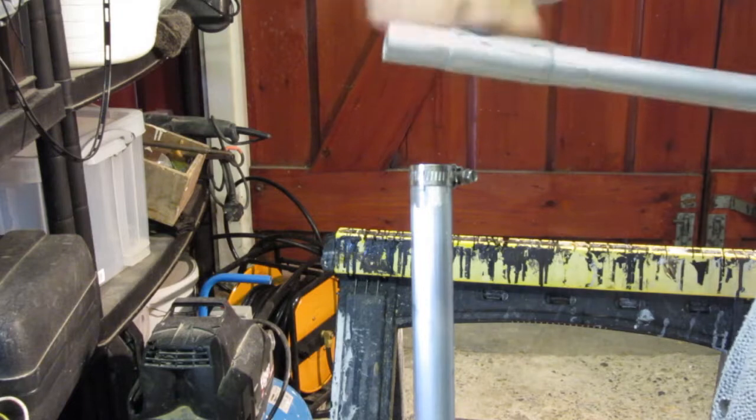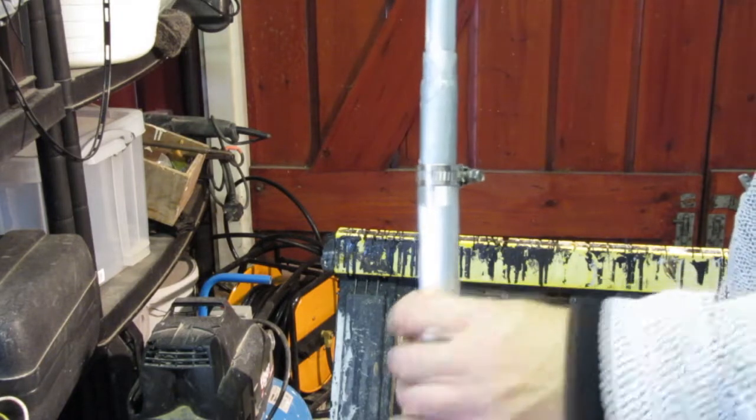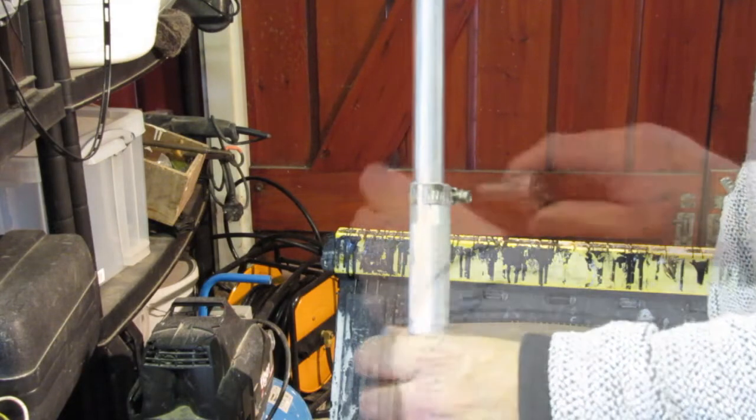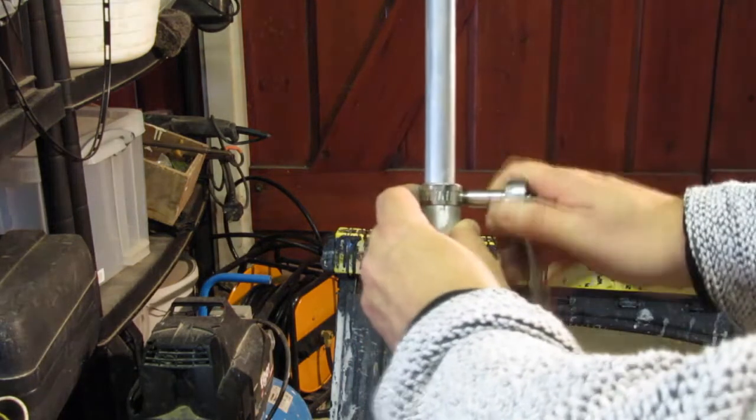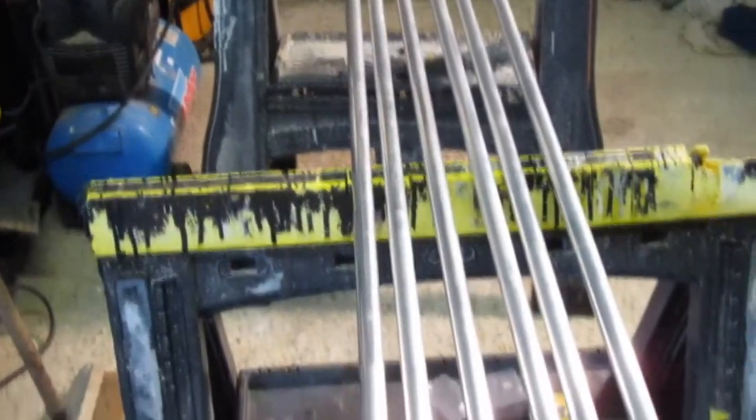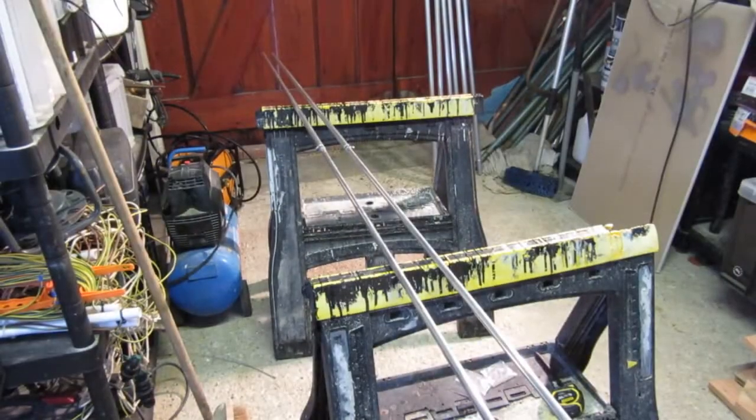When inserted leaving the correct length protruding as per the diagram, the clamp is clamping down on the press section which is a smaller diameter than the raised section. I had to tighten the clamps with a lot of force to get a tight joint. I'll talk about this at the end.